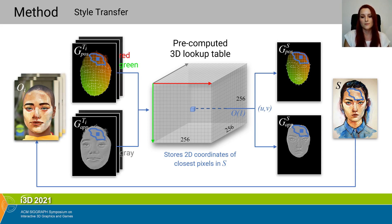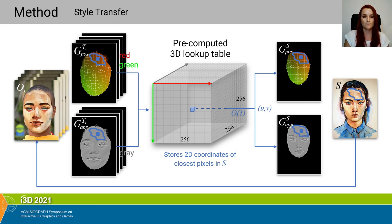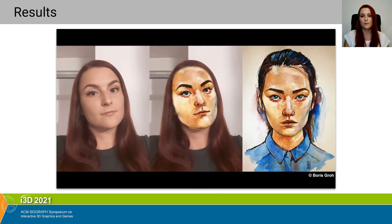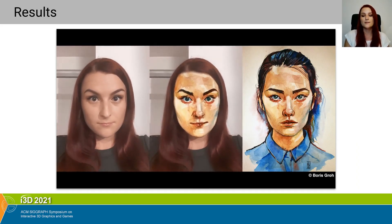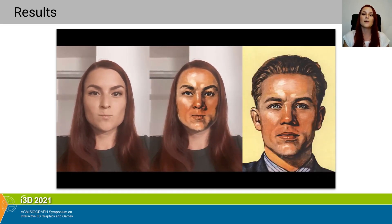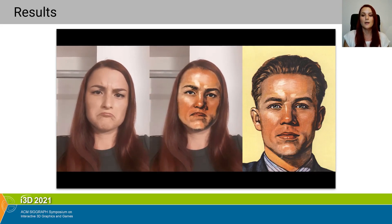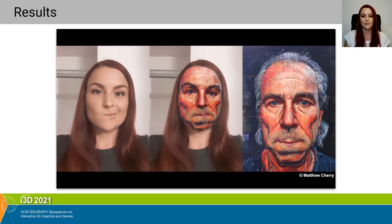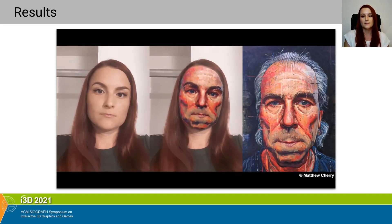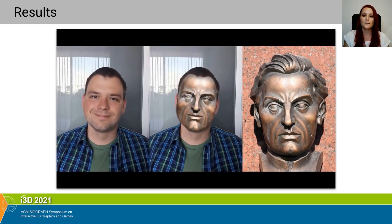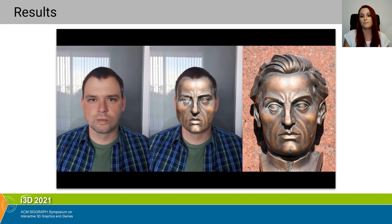This whole process is applied on each frame of the input video. Here are the results of our algorithm that allows instantly transferring an artistic style from a painting to a target video stream in real time, while preserving the target's identity and textural details of the style. It works on various styles, and it does not have to be a painting — it can be, for instance, a photo of a bronze sculpture.